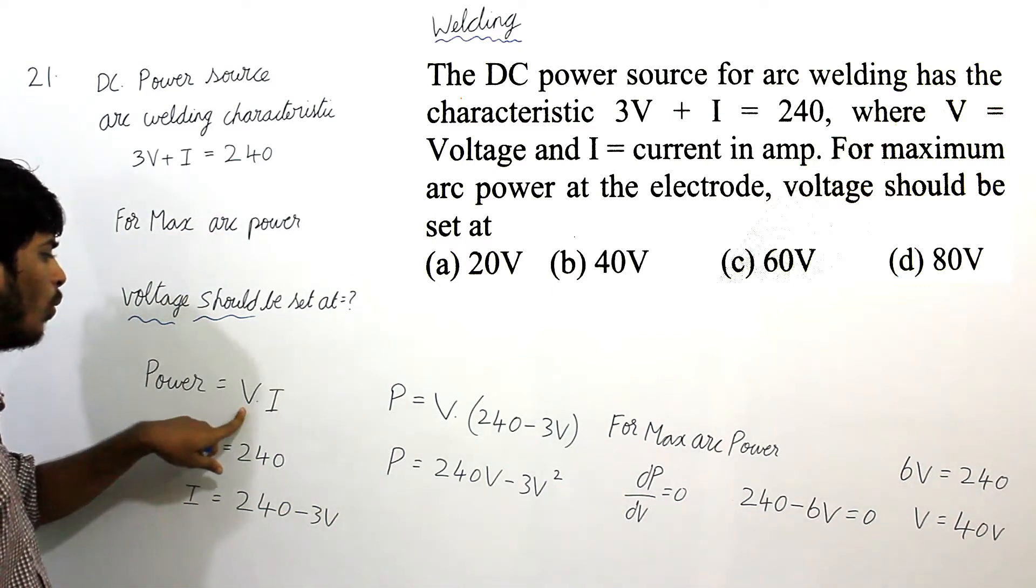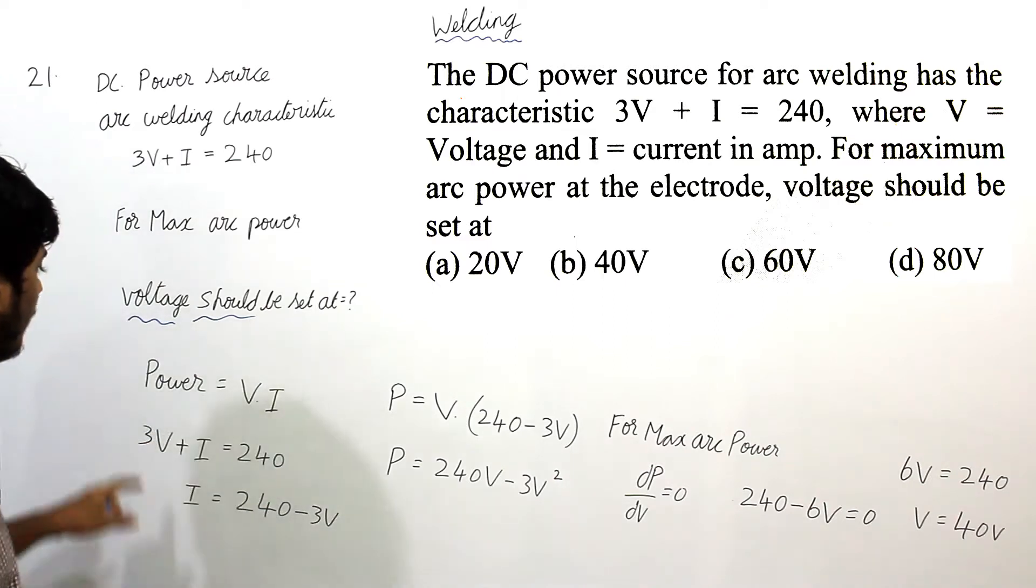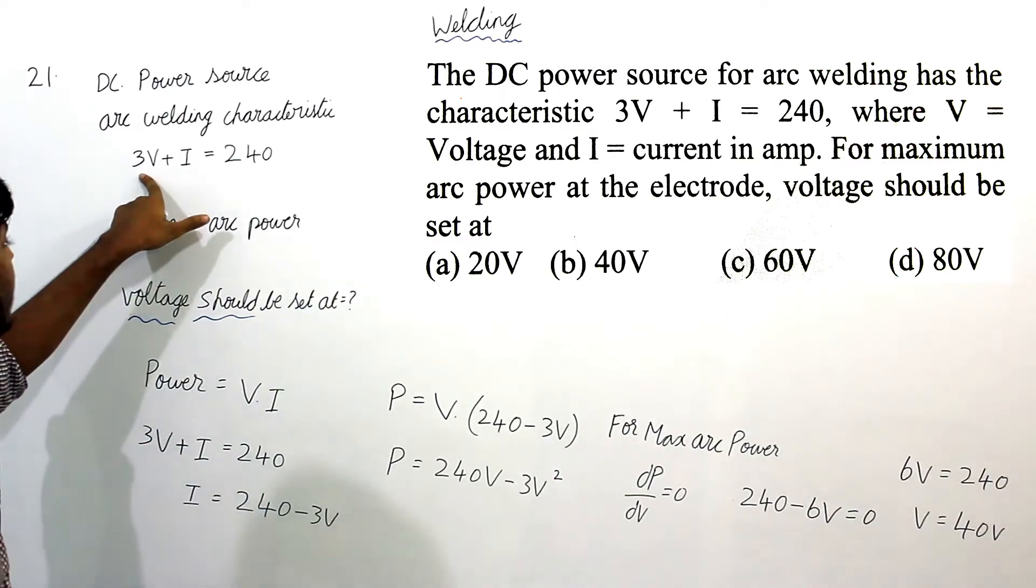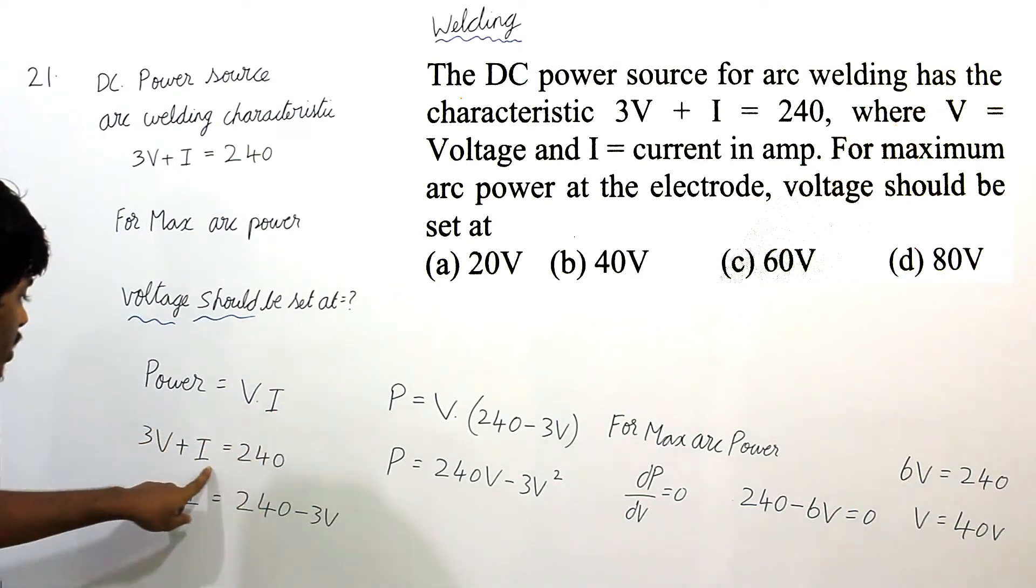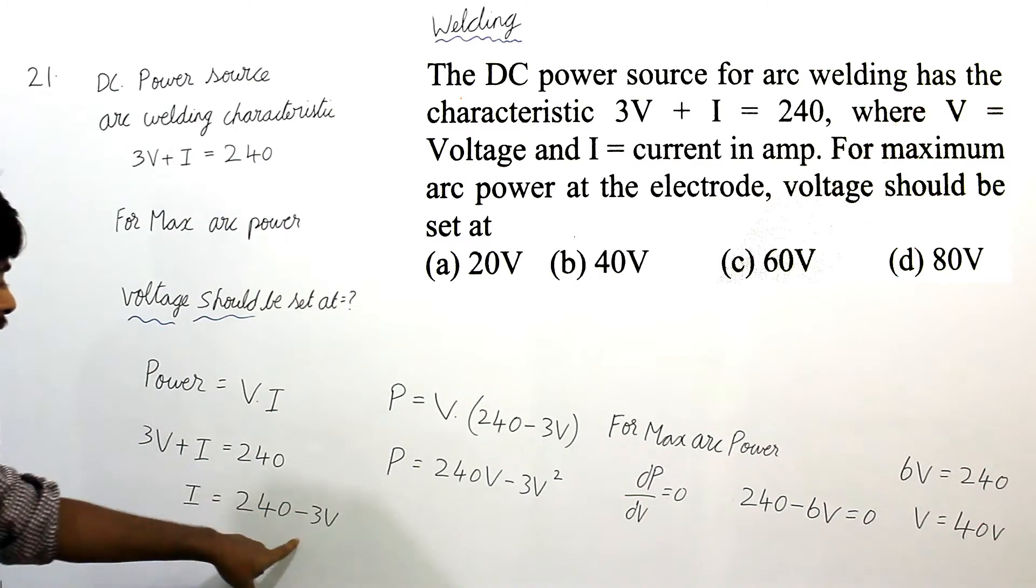We know that power is equal to voltage times current. From the given equation 3V + I = 240, we can solve for I: I = 240 - 3V.